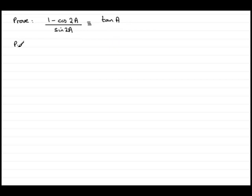So if we put our proof down, take the more complicated side, which is the left hand side here: 1 minus cos 2a all divided by sine 2a.